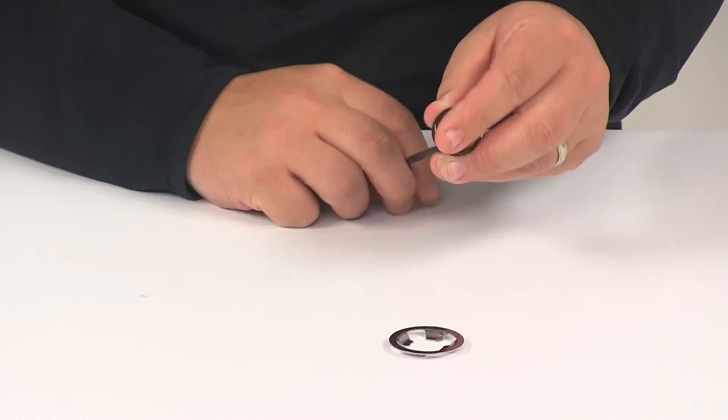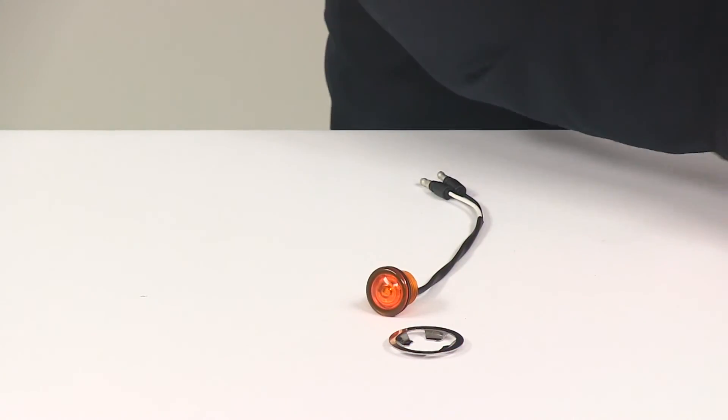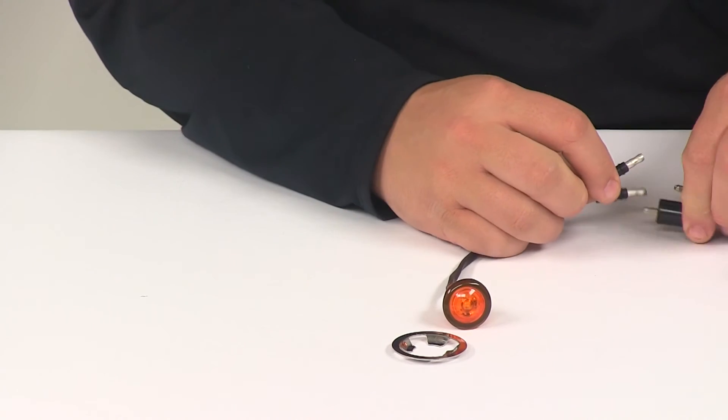We're going to go and hook it up to power. That way you can see what it looks like with some power running to it. We'll also be able to turn off our overhead lights so you can see it in a low-light setting.